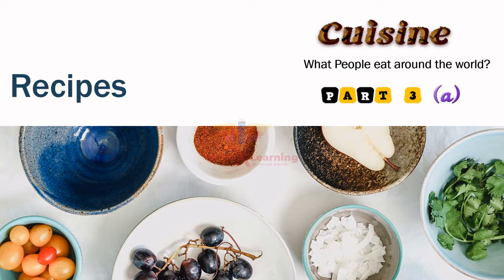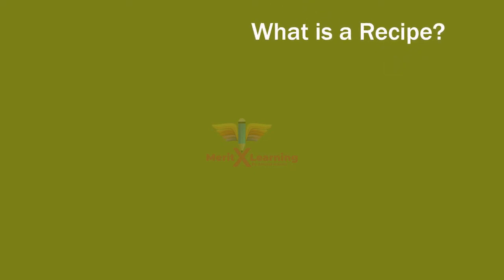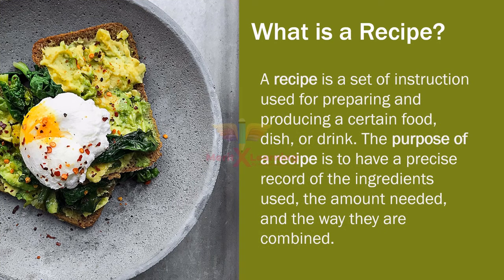So what is a recipe? A recipe is a set of instructions used for preparing and producing a certain food dish or drink. The purpose of a recipe is to have a precise record of the ingredients used, the amount needed, and the way they are combined.